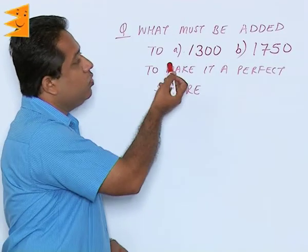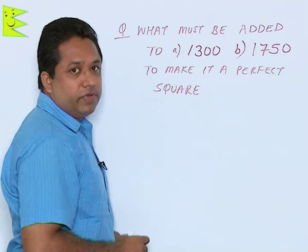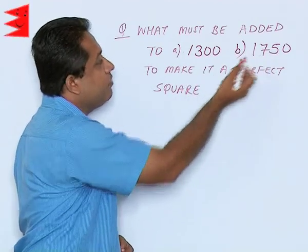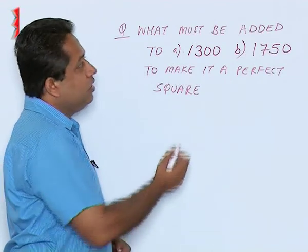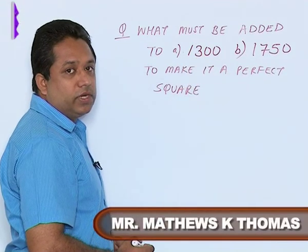What must be added to 1300 to make it a perfect square? Now 1300 is not a perfect square, 1750 is not a perfect square, but we can add something to these to make it a perfect square.